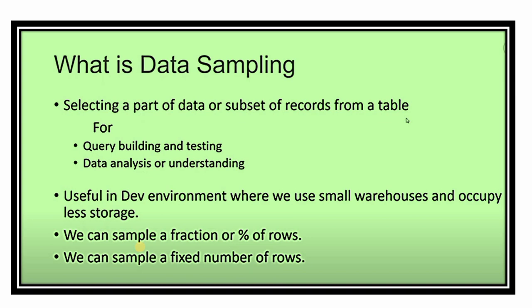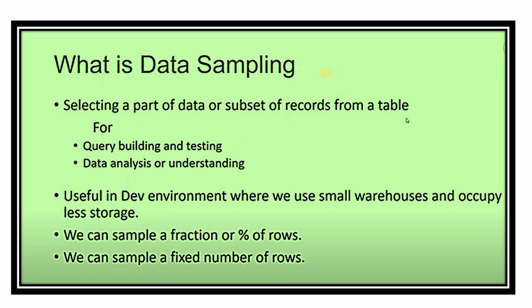Now let's see the sampling methods available in Snowflake. There are basically two methods: the first is Bernoulli or Row, and the second is System or Block. You can call them interchangeably — Bernoulli or Row, System or Block. By default, when no method is specified, Bernoulli (Row) will be applied.